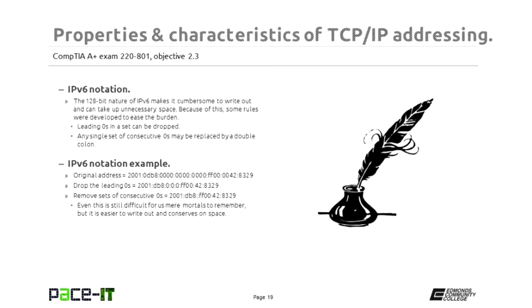A word of caution about the double colon: any single consecutive set of zeros can be represented by the double colon, but do not use the double colon more than once or you will confuse everybody. IPv6 is always 128 bits. If you had two different consecutive sets of zeros and put in two double colons, your system would not know how many zeros to put into which space. So always use a single instance of the double colon when replacing consecutive sets of zeros.